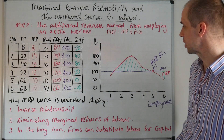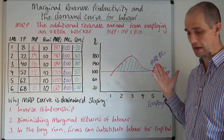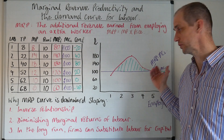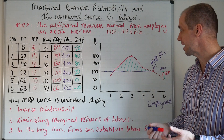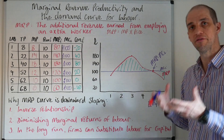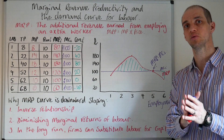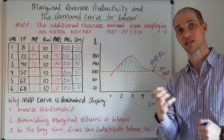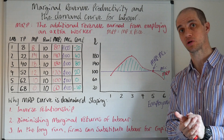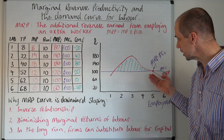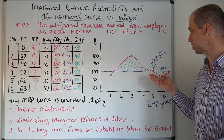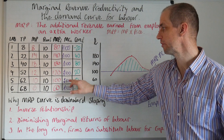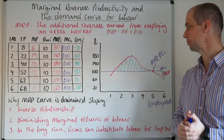A couple of things to note: this marginal revenue product curve becomes our demand curve for labour. Why? Because the firm is attached to ensuring that the revenue earned by that employee is in excess of its marginal cost. So this is our demand curve for labour, and we can see that they would employ five labourers at a cost of £100.